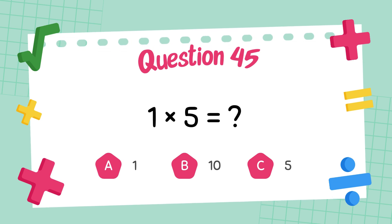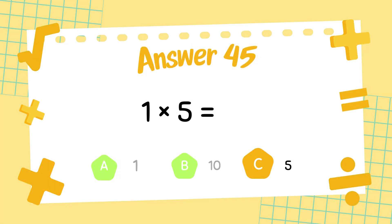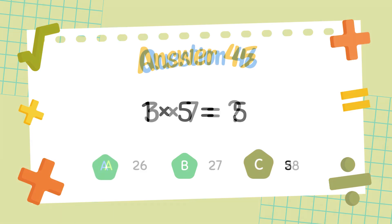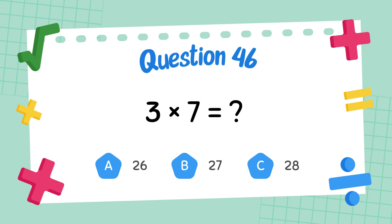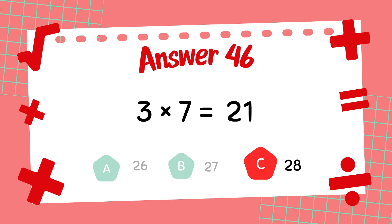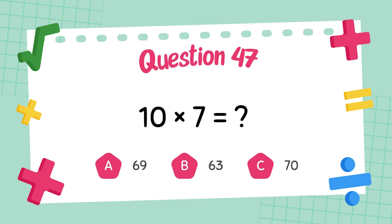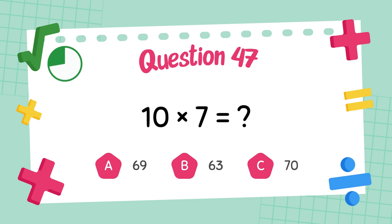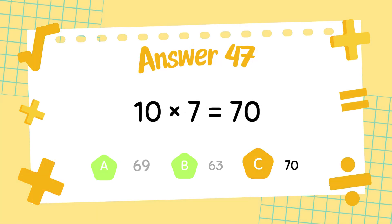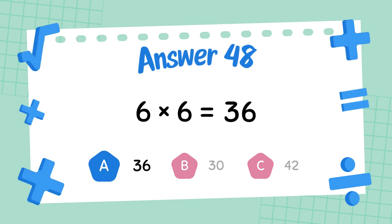What is 3 times 7? The answer is 21. What is 6 times 6? The answer is 36.